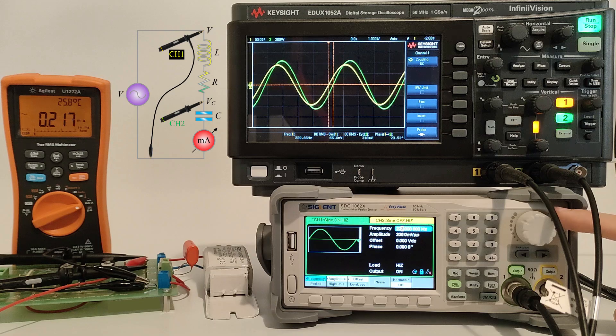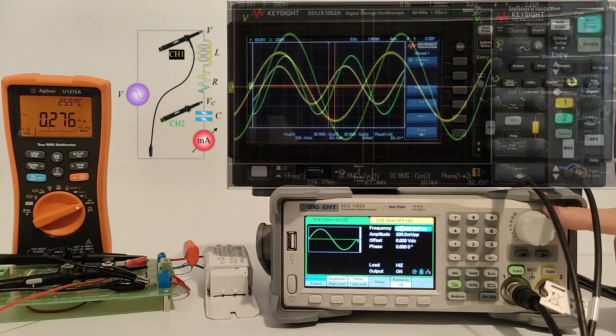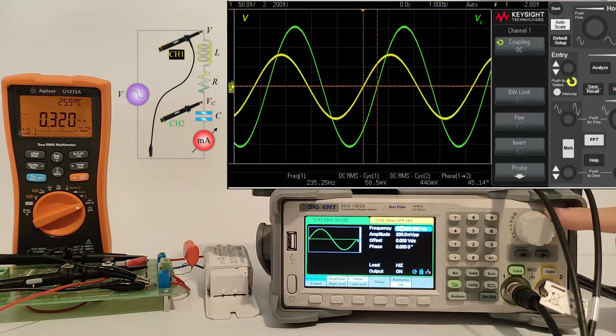We supply the circuit from the function generator with a sinusoidal voltage of 200 millivolts peak to peak.